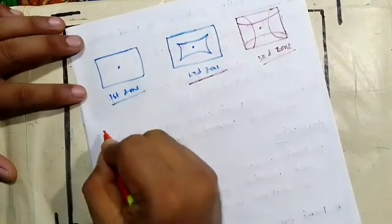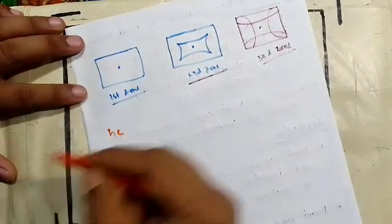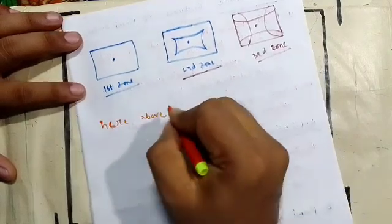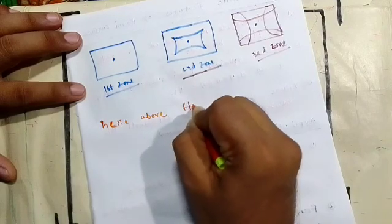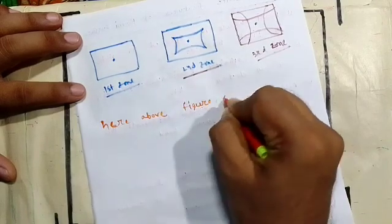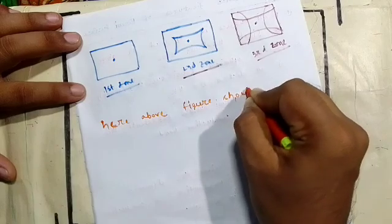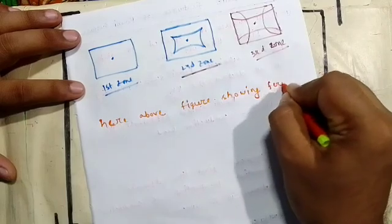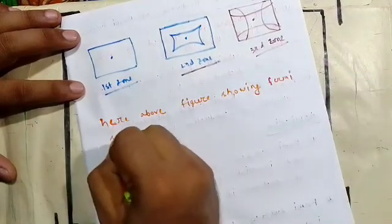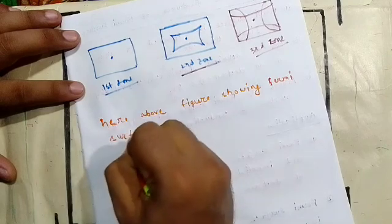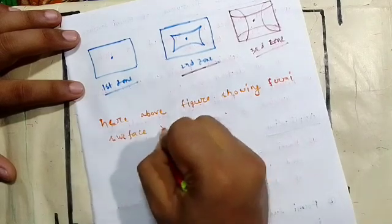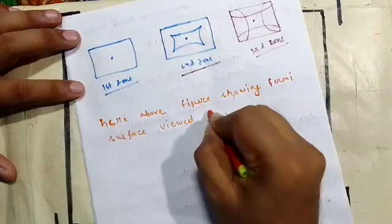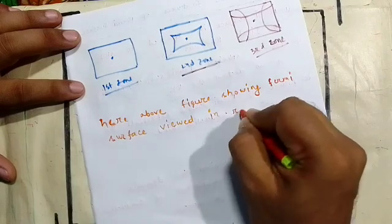So here above figure showing Fermi surface viewed in reduced zone scheme.